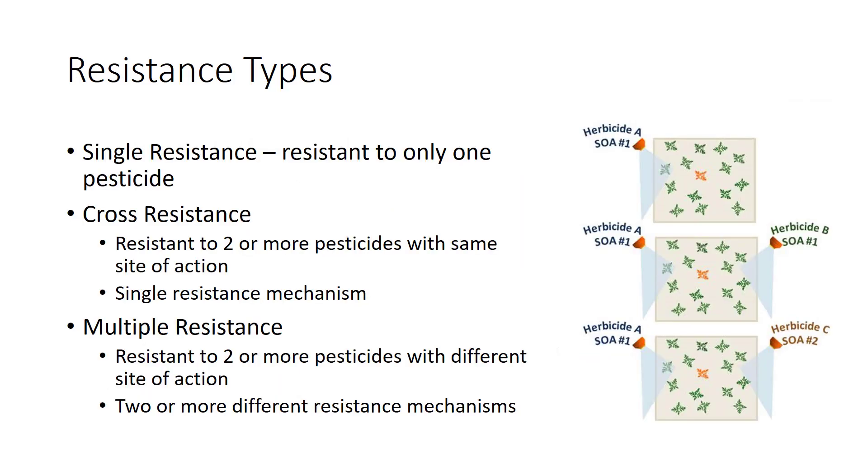The silverleaf whitefly, the Colorado potato beetle, and the diamondback moth are resistant to virtually all chemicals available for control. Chemically-based pest control of these and many other pests may soon become virtually impossible because many show cross or multiple resistance. Cross-resistance is where the resistance mechanism for one insecticide gives tolerance for another with the same mode of action. Multiple resistance is resistance to two or more pesticides with different sites of action. This figure shows resistance of plants to herbicides, but the same pattern is seen in insect pests.